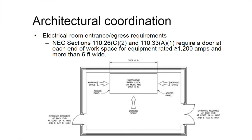I'm going to talk about how we coordinate electrical installations with a number of different disciplines. First, we'll discuss architectural coordination with NEC Sections 110.26 and 110.33. Section 110.26 addresses egress and access to electrical spaces — it requires adequate space for egress and entry. Section 110.26 applies to equipment less than 1,000 volts, and Section 110.33 applies to equipment greater than 1,000 volts.